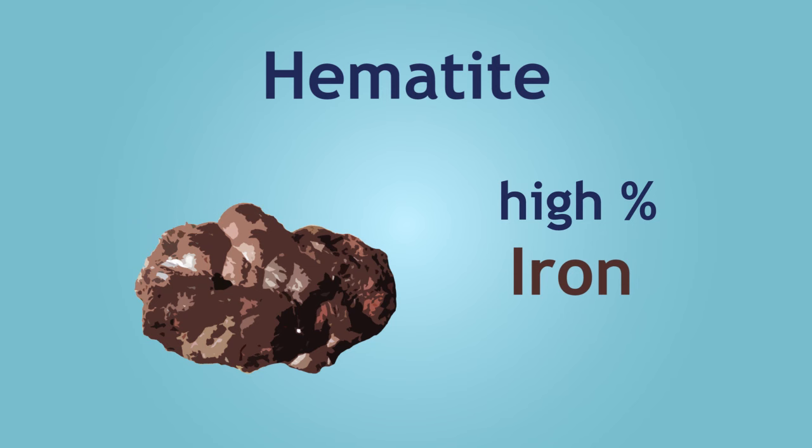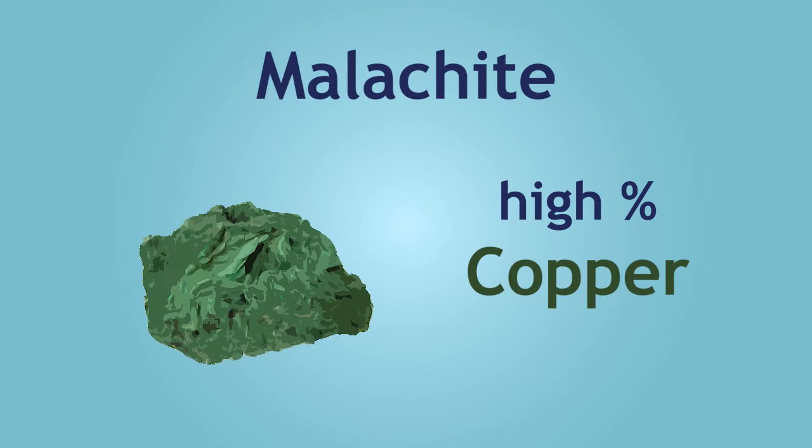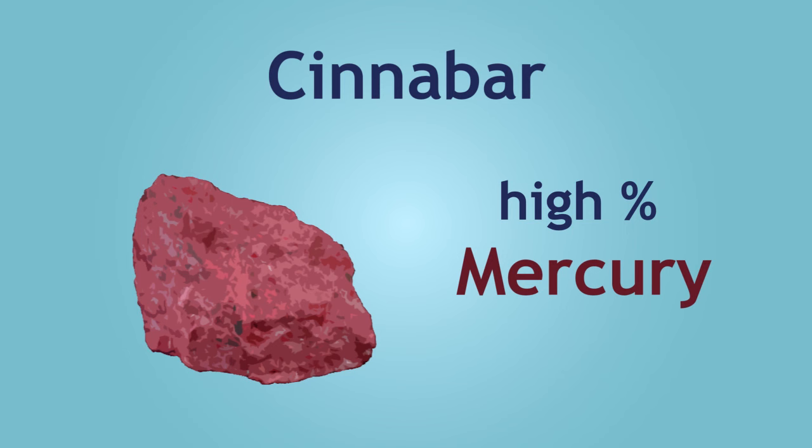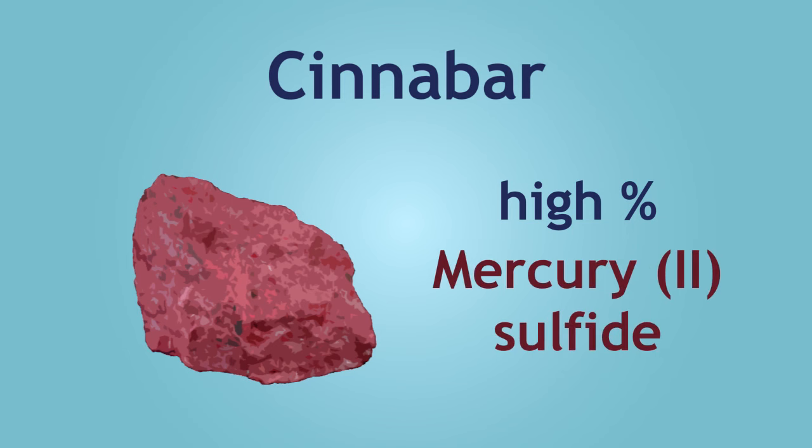The iron in hematite is mostly iron oxide. The copper in malachite is mostly copper 2-carbonate. The mercury in cinnabar is primarily found as mercury 2-sulfide.